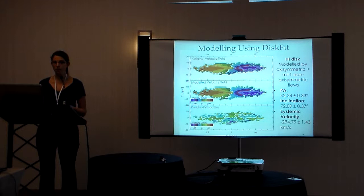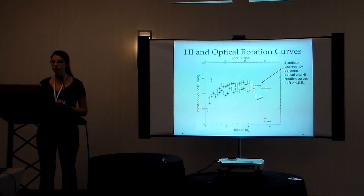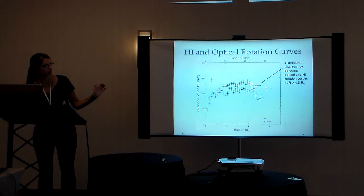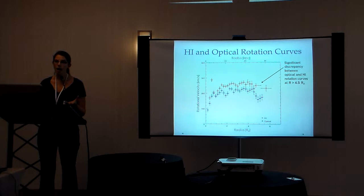So with our clean velocity fields, we could derive the H1 and the optical rotation curves for M31, which I've shown in this plot. You can see that they agree quite well in the inner part of the disk. But as you get further out from the disk, the optical rotation curve, which I've plotted in blue, tends to be lower than the H1 rotation curve. And this indicates that the rotational motions of the planetary nebulae is lagging behind the rotation of the gas, which is an example of asymmetric drift.